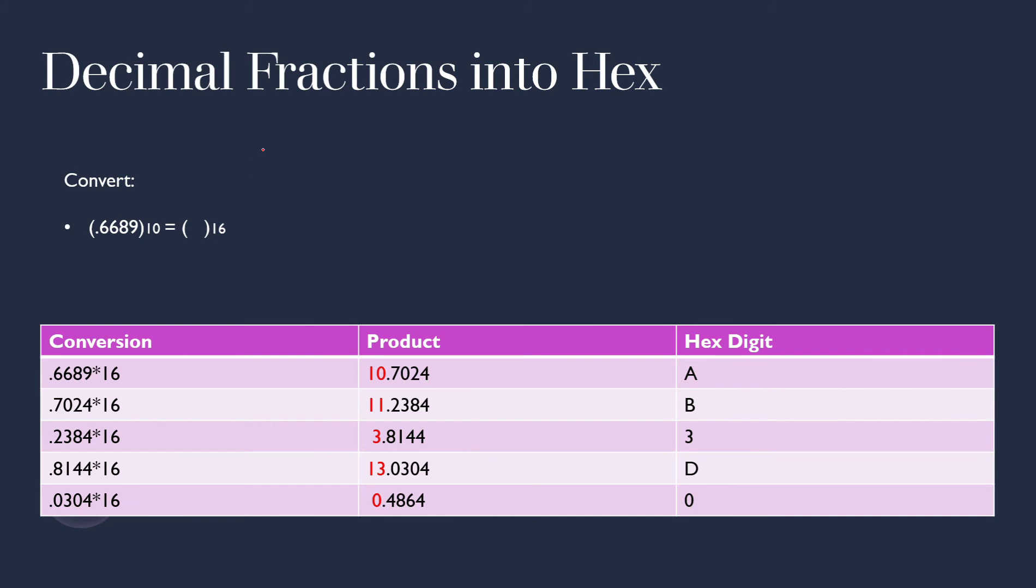So how do we do decimal fractions into hex? So what we're going to do is we're going to do a repeated multiplication of 16. So we're going to take the first value, 0.6689. And we're going to multiply it by 16. And we're going to take out whatever digit is in the integer place. So over here, this is the product. It's going to be 10.7024. All we care about is this. We're going to keep that as our hex digit. And 10 maps out to A. So that's how we get this A digit right here.